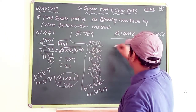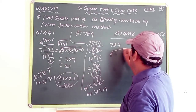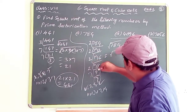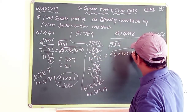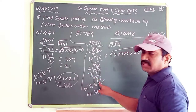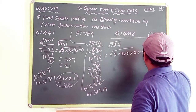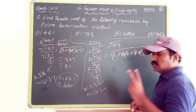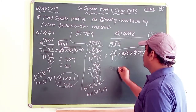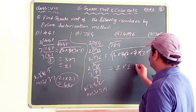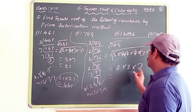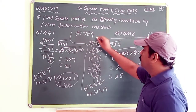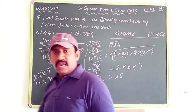For the square root of 784: we have four 2s and two 7s. From each pair of 2s, take one 2, giving 2×2 = 4. From the pair of 7s, take one 7. So the square root is 4 × 7 = 28. The square root of 784 is 28.